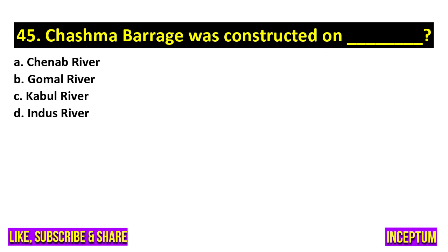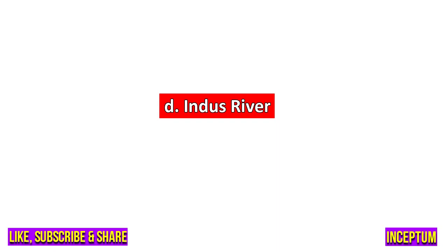Question number 45. Chashma Barrage was constructed on which river? In the options we have Chenab River, Gomal River, Kabul River, Indus River. And the right one is option D, Indus River.